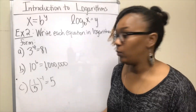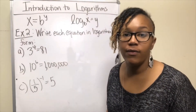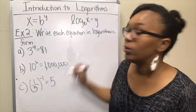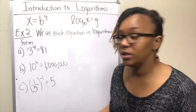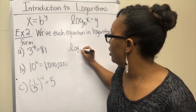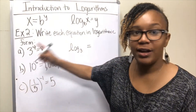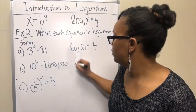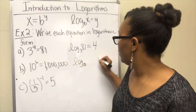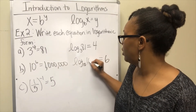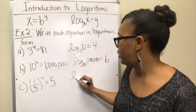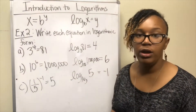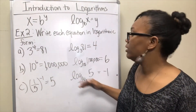For example 2, we want to go the opposite way — I have exponential equations and we want to write each in logarithmic form. Whenever you write it in logarithmic form, first know what the base is. The base here is 3, so that looks like log base 3. The exponent of 4 goes on the other side of the equal sign, which means your 81 goes inside the log. For the next one, base is 10, the exponent goes on the other side, and 1 million goes inside the log. Following the same pattern, base is 1 fifth, negative 1 is the exponent on the other side, and 5 goes inside the log.